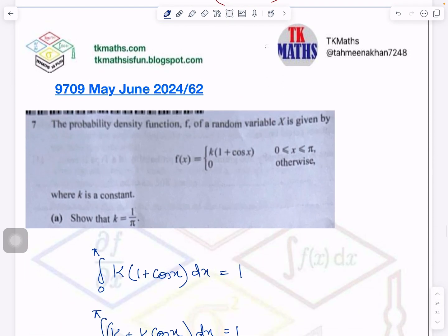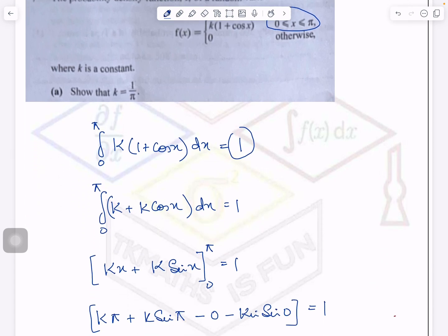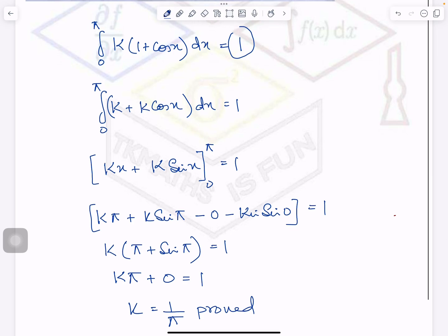Seventh question which is related to probability density function. First part was easy. We know when we have to find out the constant given in it. Then for the whole interval, the answer is equals to 1. And we simply apply integration and get the answer.